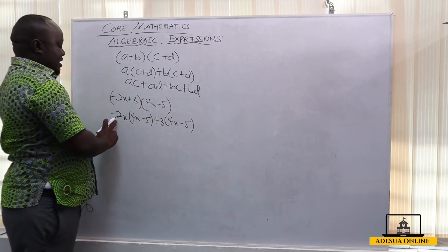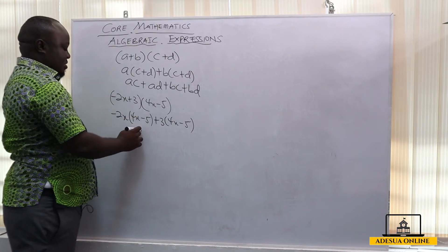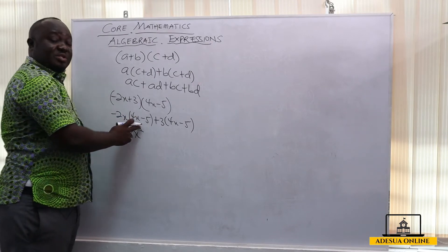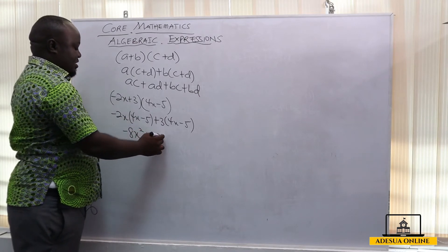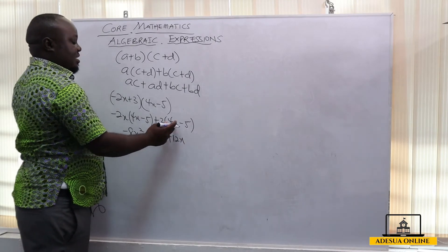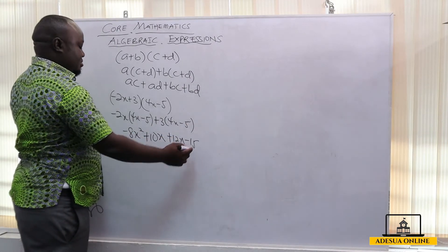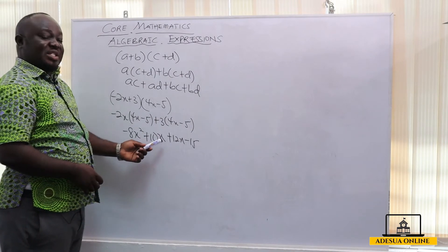So when we expand, negative 2 times 4 is negative 8, x times x is x squared. Minus 2 times minus 5 is positive 10 and then times x. 3 times 4 is 12 and then x, and then 3 times minus 5 is minus 15. Now when you work through our middle terms, we can simplify them.